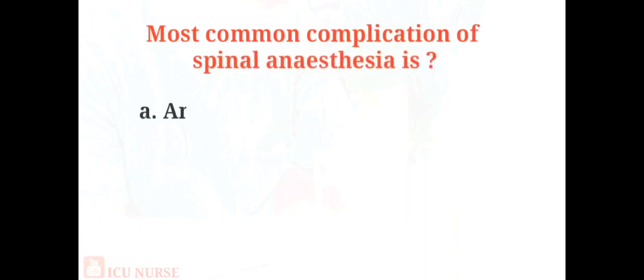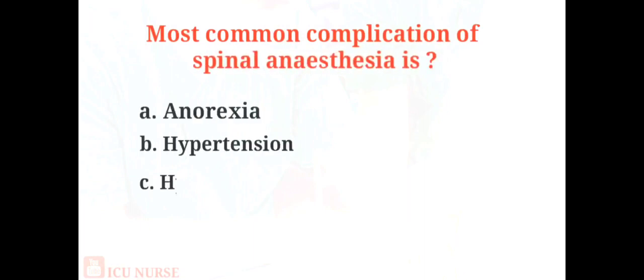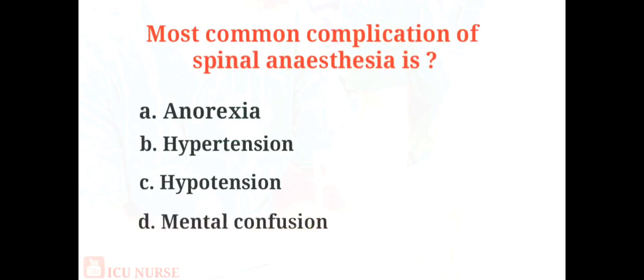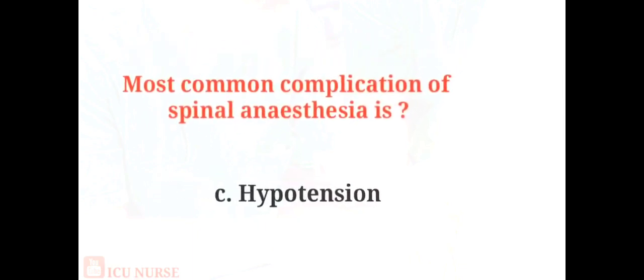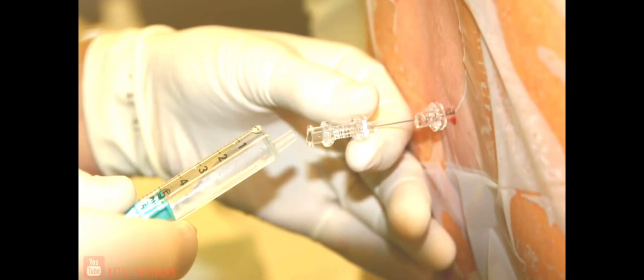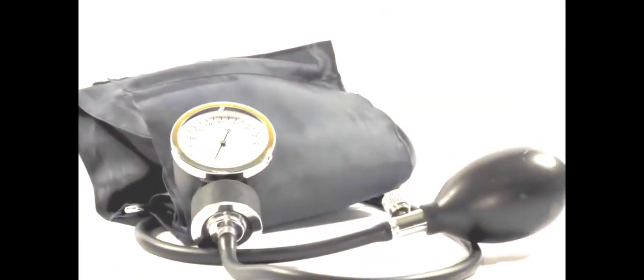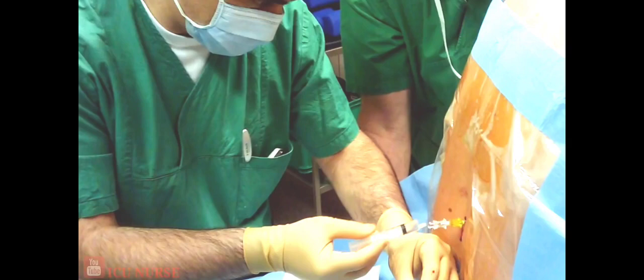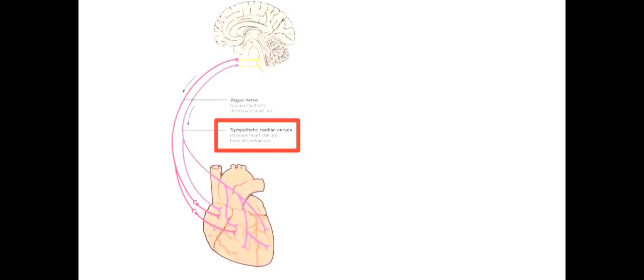The most common complication of spinal anesthesia is: A. Anorexia, B. Hypertension, C. Hypotension, D. Mental confusion. The answer is C. Hypotension. The degree of hypotension is greater at higher levels of spinal anesthesia. The significant decrease in blood pressure during high spinal anesthesia is mostly due to blockade of the cardiac sympathetic nerve.